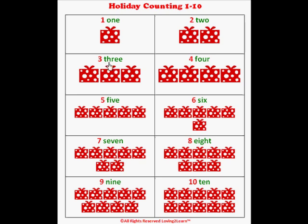Count the presents: one, two, three. Here's the number four. Here's the word four. Spell it with me: F-O-U-R. Count the presents with me: one, two, three, four. Here's the number five. Here's the word five.